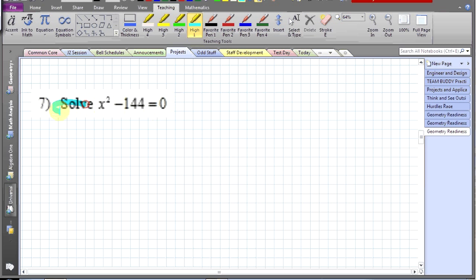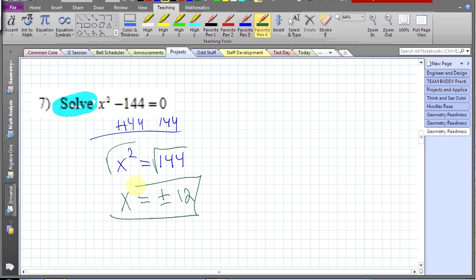Okay, we're going to continue on with our geometry readiness test and we're going to solve this quadratic equation. It's a quadratic because of that term right there, x squared. One technique is to move the 144 to the other side. Since this is a binomial with only two terms, the only thing left to do is square root both sides. So I have x equals, don't forget, plus and minus 12. That means there's two solutions.